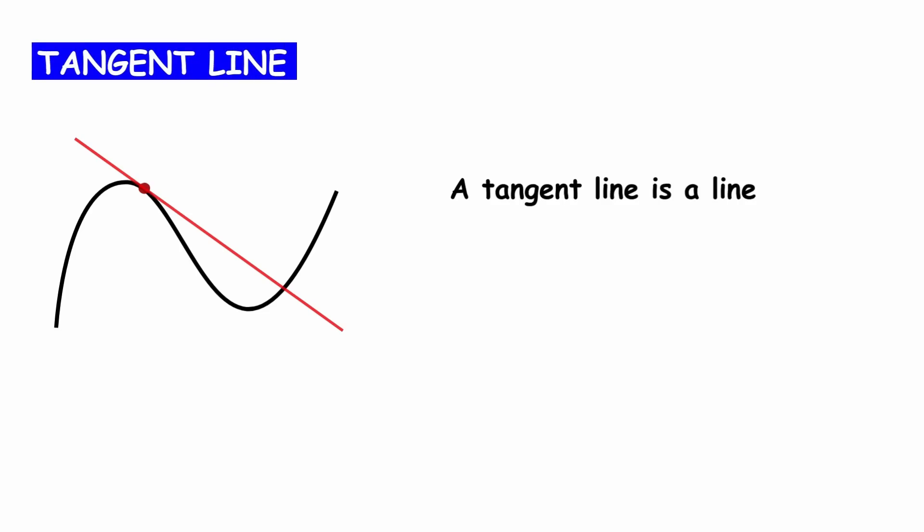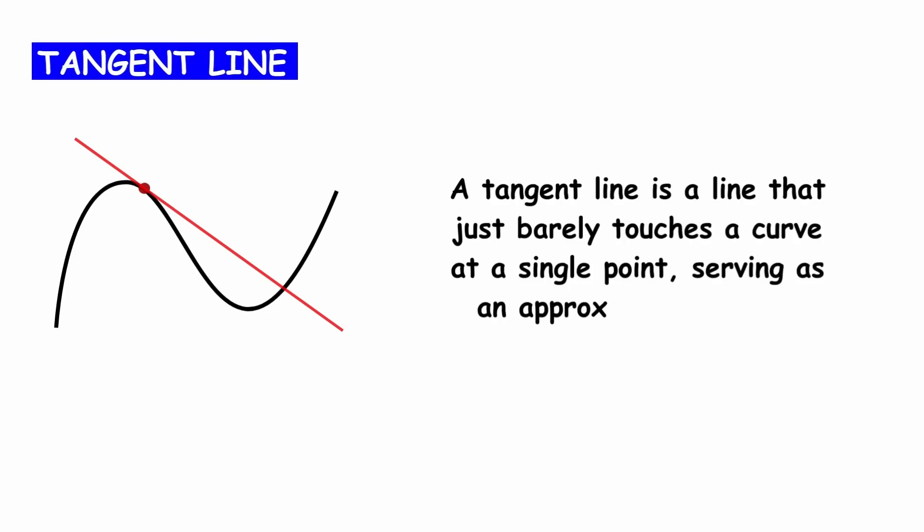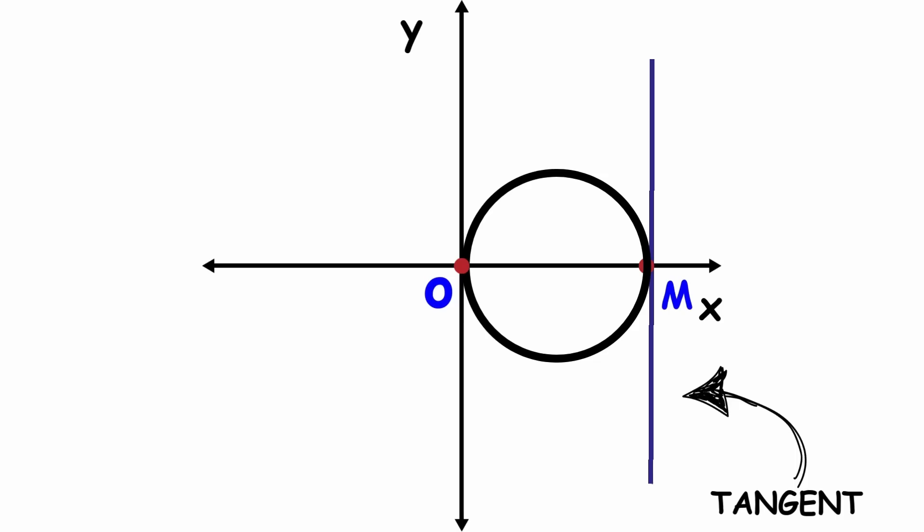A tangent line is a line that just barely touches a curve at a single point, serving as an approximation of the curve near that point. Now we can pick any point A on the circle other than O, and we will draw a line passing through both O and A. Since this line touches the circle at two distinct points, it is called a secant line. The aforementioned lines will intersect at a point N.